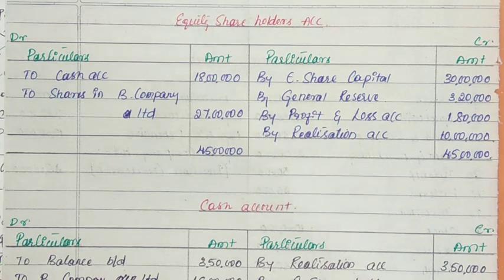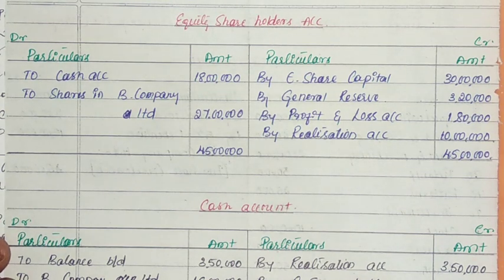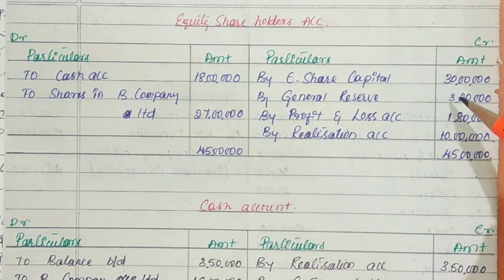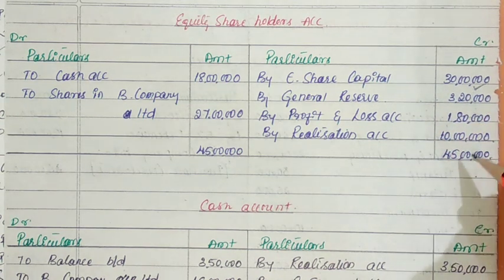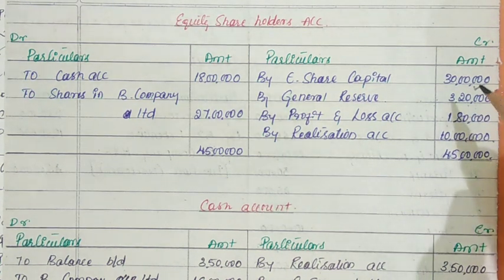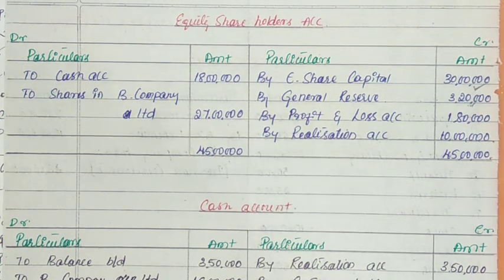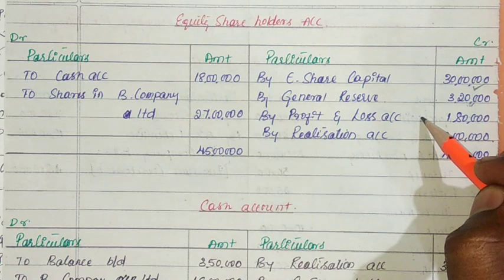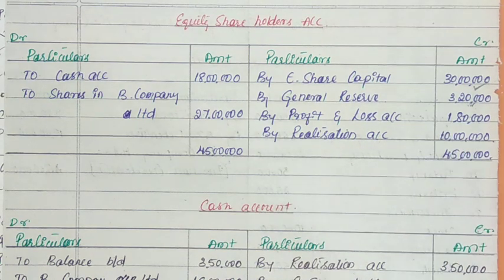Next, the equity shareholders' account — be careful while preparing this. Firstly, you are supposed to credit the balance sheet balances. Credit equity share capital of 30 lakhs. In addition to that, you are supposed to credit all reserves, apart from statutory reserves. Statutory reserves are to be maintained in the new company, so a separate entry is passed for statutory reserves.